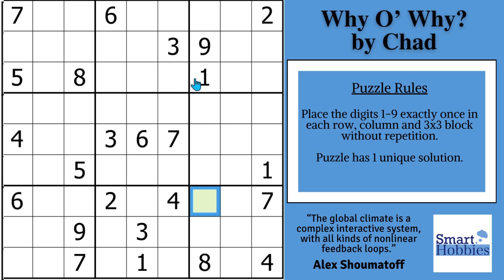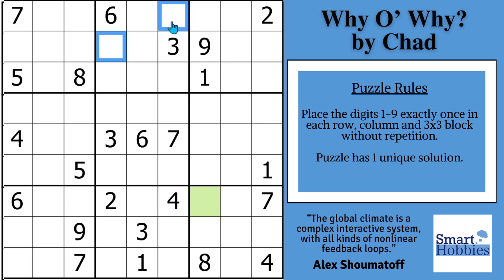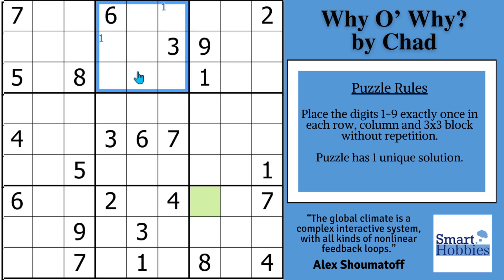Look up here in block two — you've got this one and this one. I'm going to do possibilities for one up here, so we'll mark that. It's called Snyder Notation: any time in a 3x3 block we only have two possibilities for a digit, you can mark it. Solve one and you can solve the other cell right away.